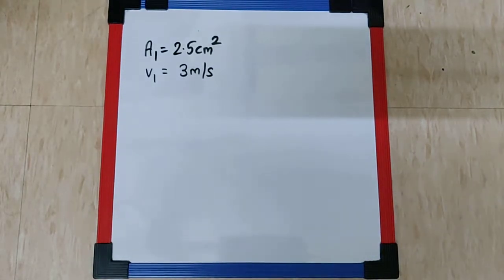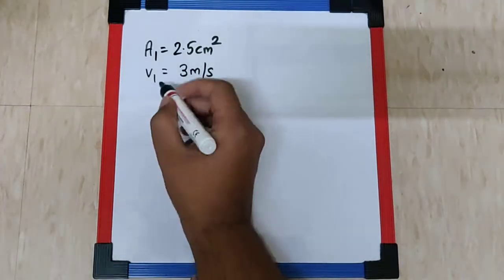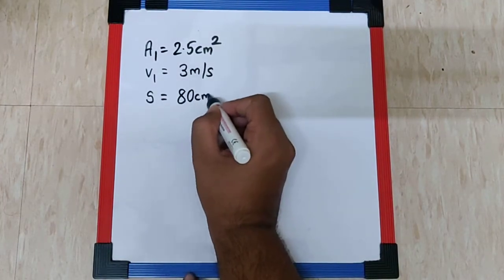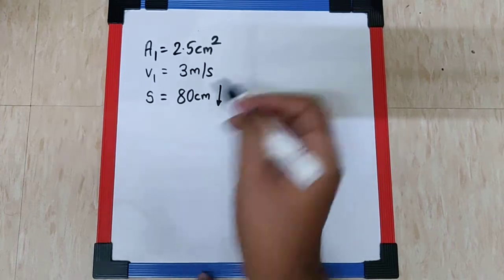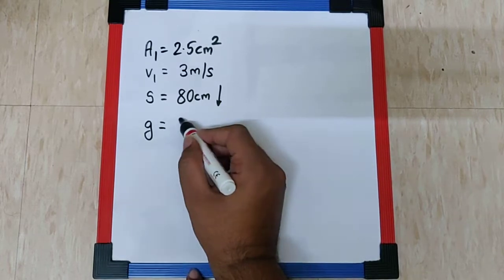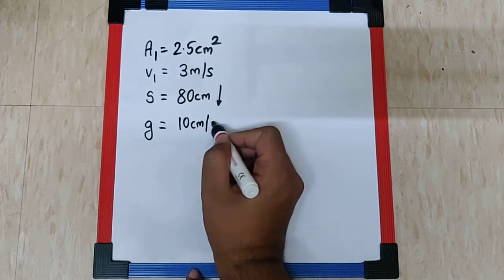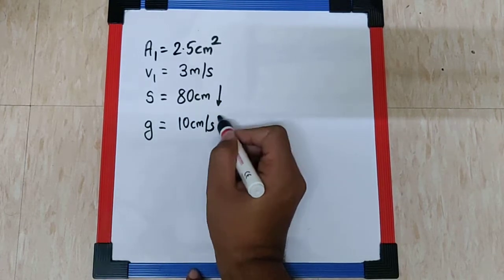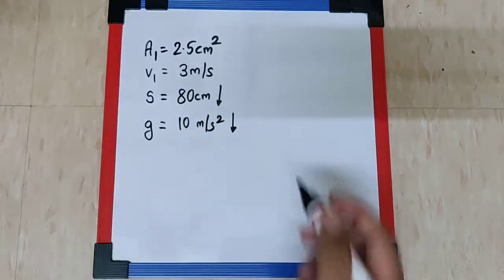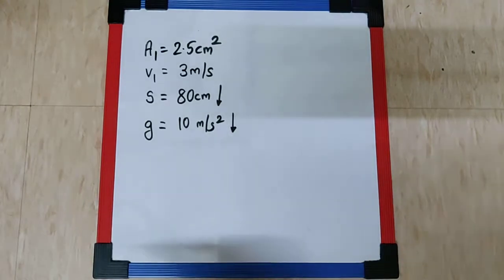The area of cross section of the water column 80 centimeter below the tap is asked. So the distance covered by the water is 80 centimeter downward, and the gravity given is 10 meter per second square downward. In the question there is an error which says 10 centimeter per centimeter square - the unit given for gravity is wrong.